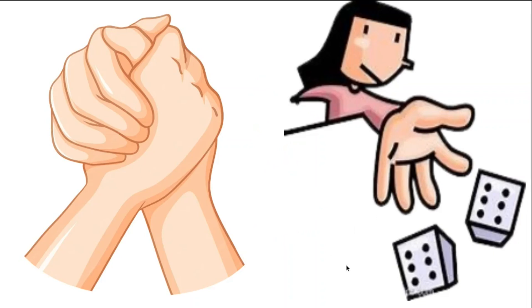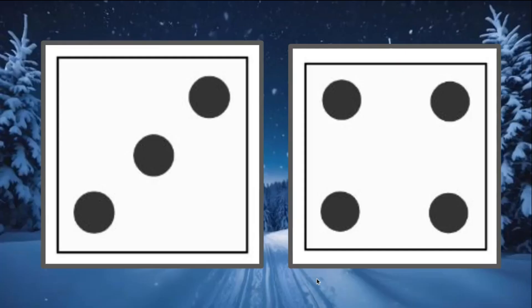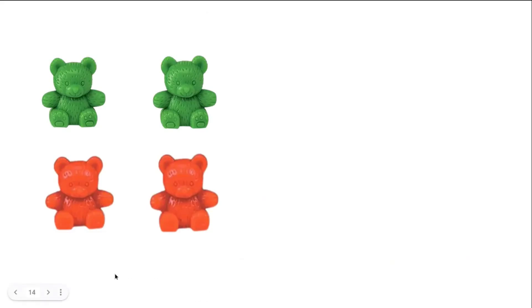It's going to be a little harder now. Now we have two dice. Ready? How many dots are on the dice? There are seven dots on the die. How can we make it equal?